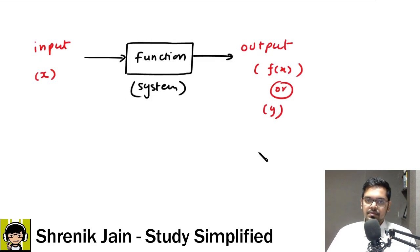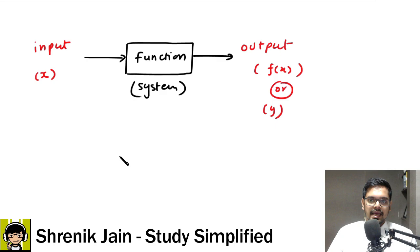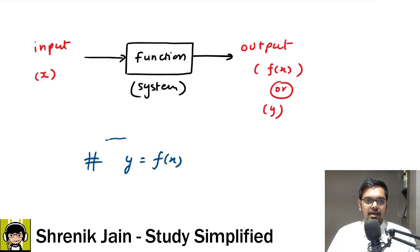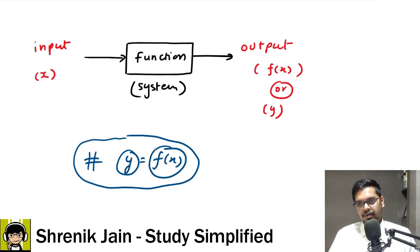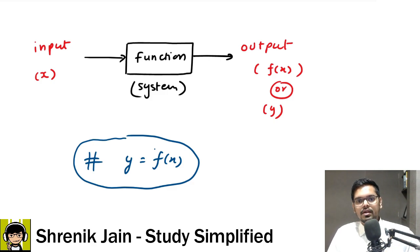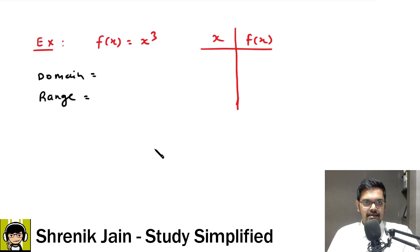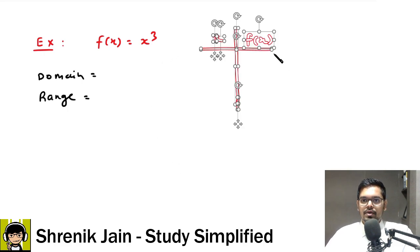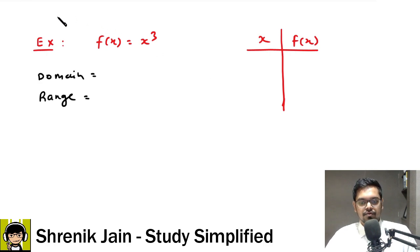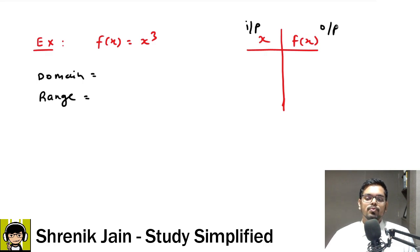A function is essentially a system: give some input, the system produces output. Input is represented by x, output by y or f(x), since y is a function of x. For example, f(x) = x³. Here x is the input and f(x) — which is y — is the output. If input is 1, output is 1³; if input is 0, output is 0³; if input is −1, output is (−1)³.